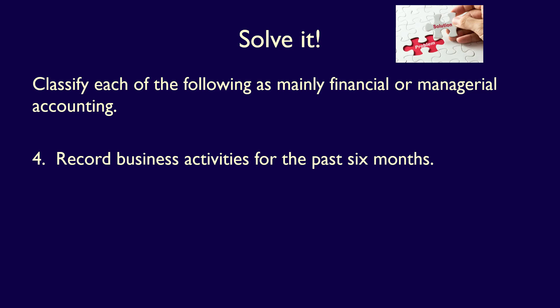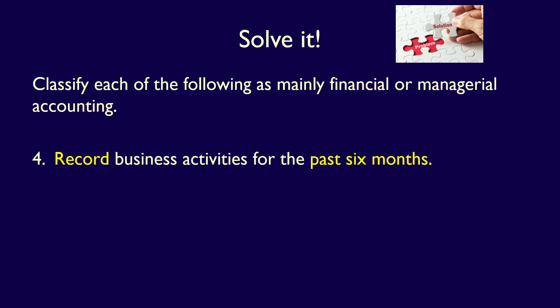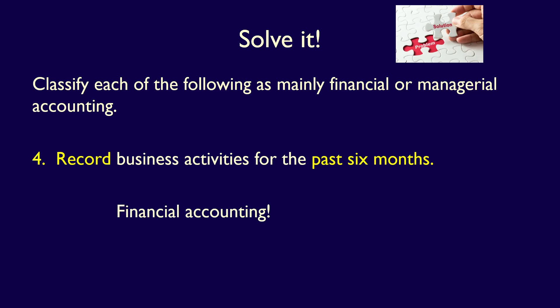Number four: Record business activities for the past six months. We are recording information from the past — historical information. This is focused on Financial Accounting. However, note that Managerial Accounting makes use of the information within an organization's financial accounting system. So even though this is primarily Financial Accounting, it is used by Managerial Accounting also.